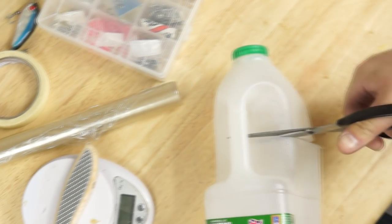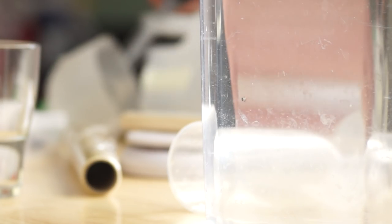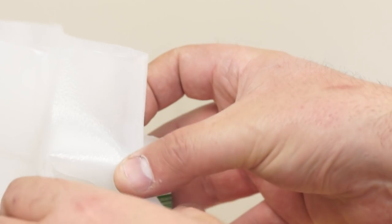So for a bit of tabletop science I'm cutting up an old milk bottle to make a displacement vessel. If I bend down the handle I can make a spout and then secure it with some tape.